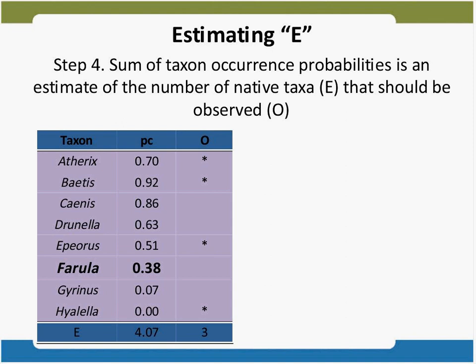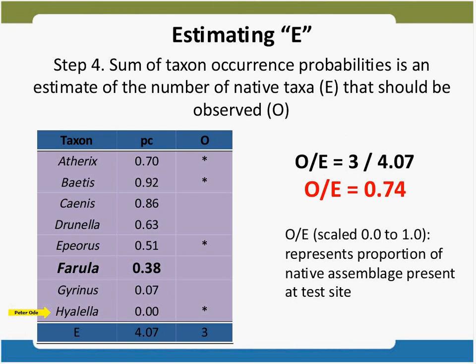We do that calculation for all species at a site, then sum the probabilities of capturing all the different taxa. By summing, we no longer care about individual species — all we care about is the count. So we might expect 4.07 taxa at that site. If we go to the site and observe four organisms but one wasn't expected to be there, then only three count toward the observed taxa. The observed-to-expected ratio is simply 3 divided by 4.07, which equals 0.74. That is our score. It runs on a scale of 0 to 1, where 1 represents the mean of sites in reference condition.